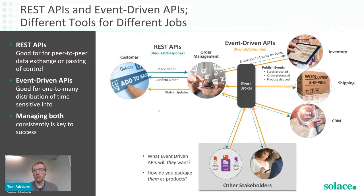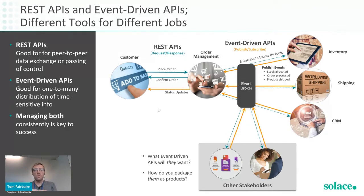For a fulfillment partner, a 'shipment ready' event is extremely useful. When talking to external stakeholders — whether outside the company or across lines of business — we want a single easy-to-consume entity they can use. We need a way of managing both our REST APIs (already handled by API gateways and developer portals) and our event-driven APIs too.